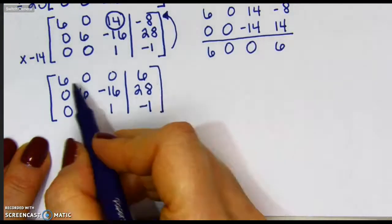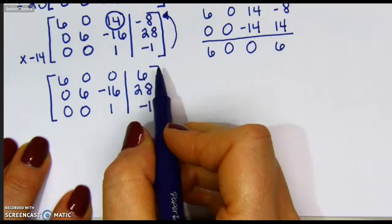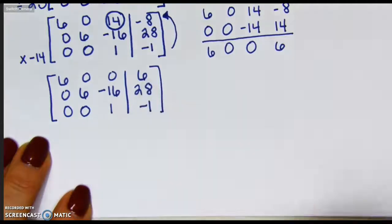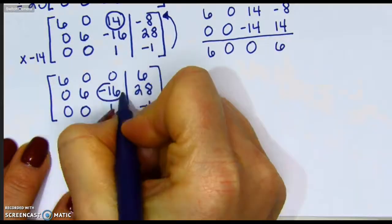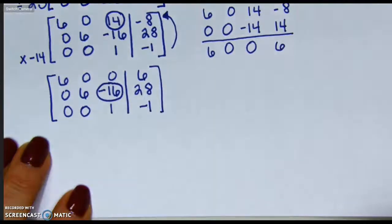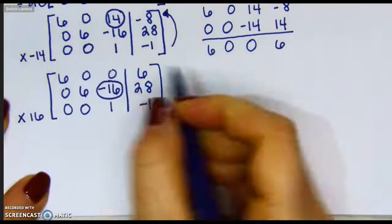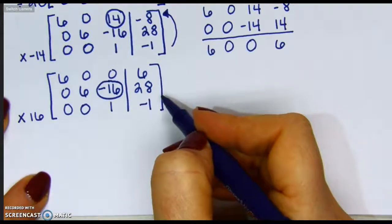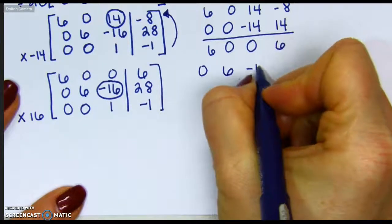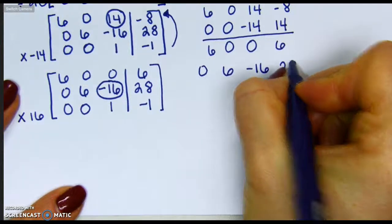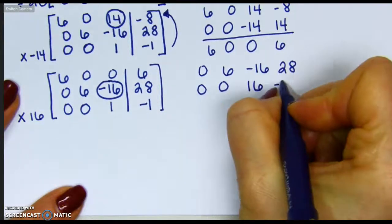I could now at this time, since I'm not going to be able to use this top row anymore because it's filled with 0s, I can now divide that top row by 6, but I'll wait until the end here. I need a 0 in this location where the negative 16 is. So to do that, I'm going to multiply my bottom row by positive 16 since it's already the opposite value. So my middle row will be 0, 6, negative 16, 28, and my bottom will be 0, 0, 16, negative 16.